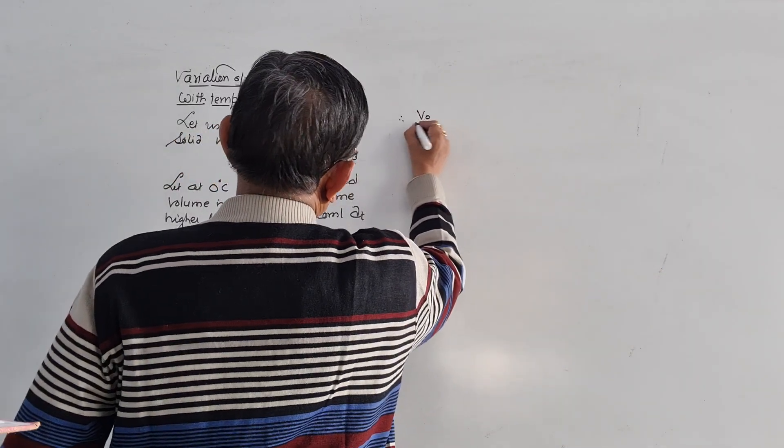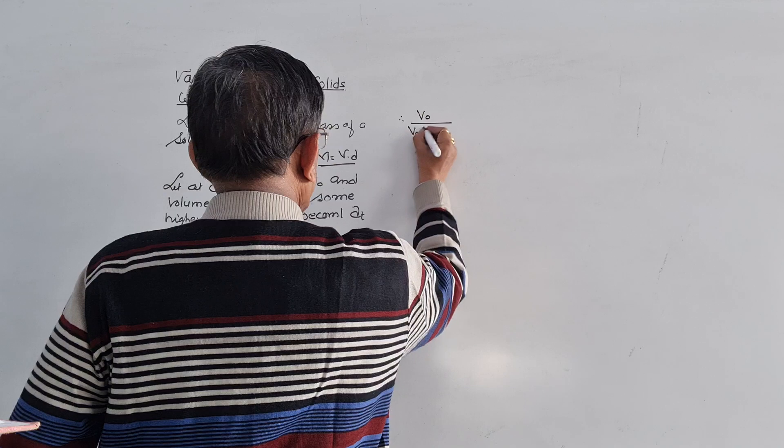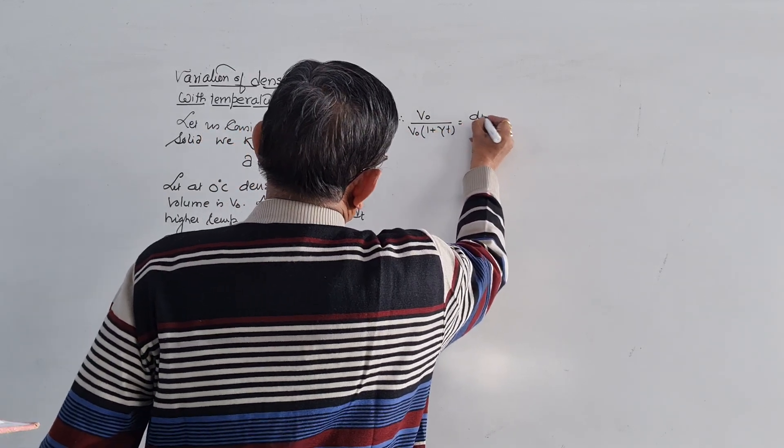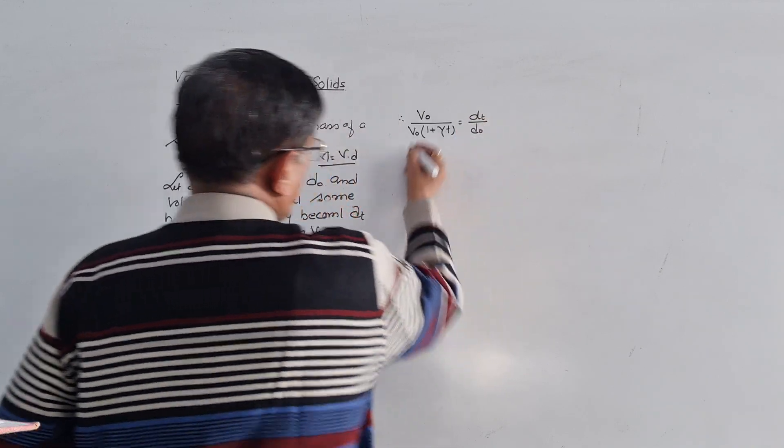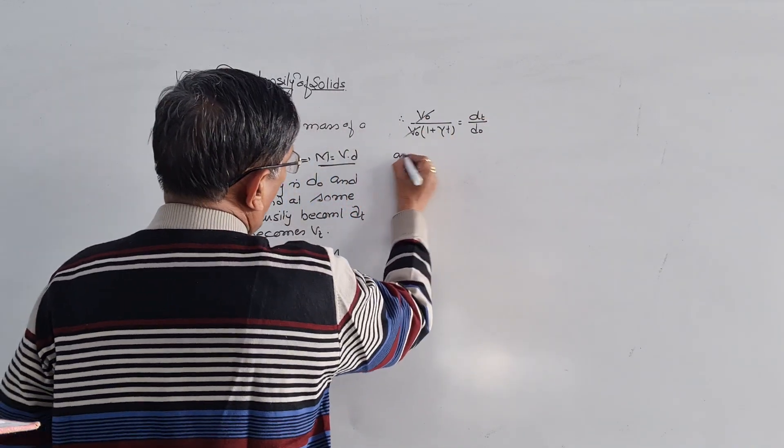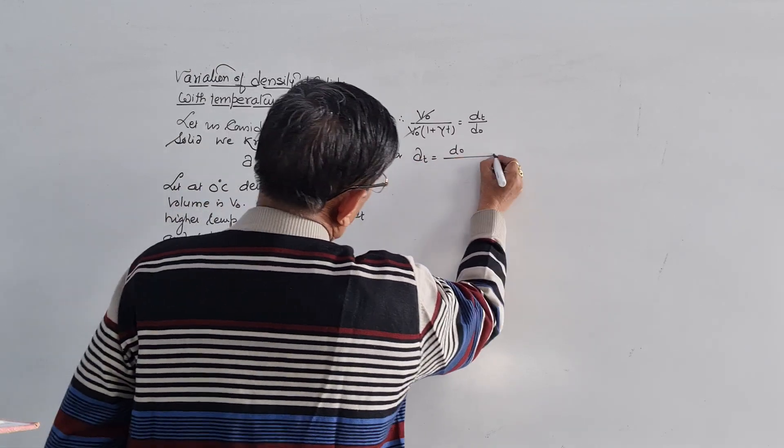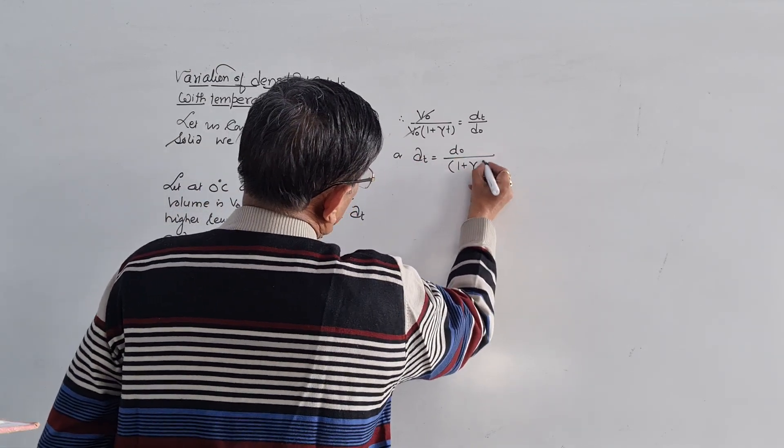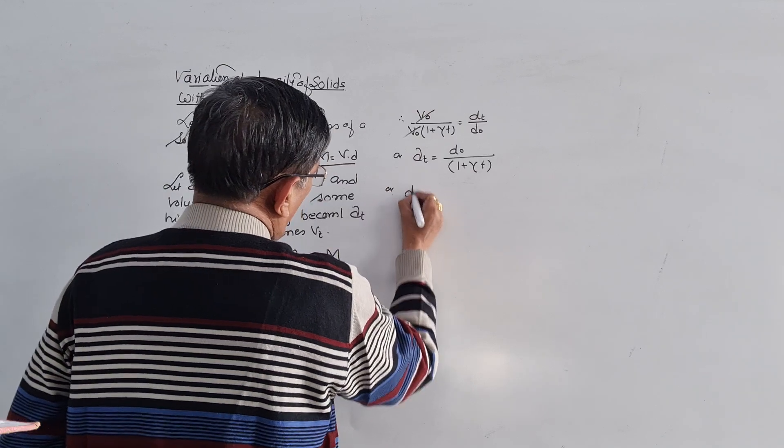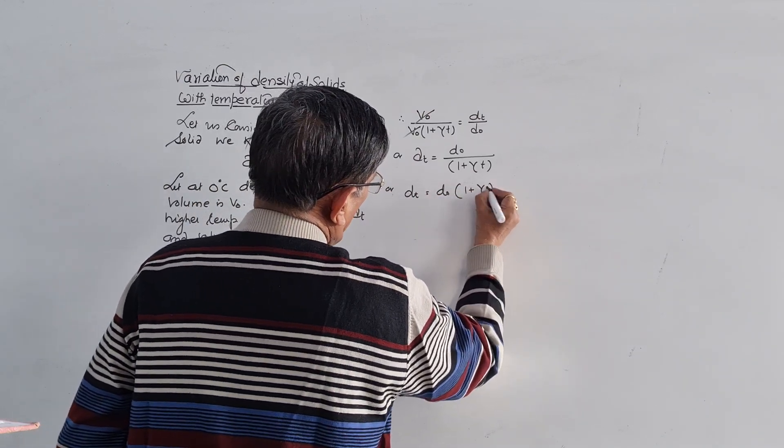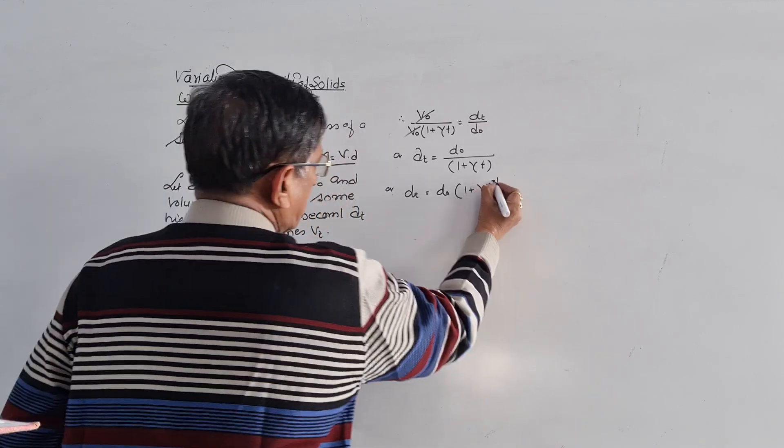V0 upon Vt is equal to V0 upon V0(1 + γt) is equal to Dt upon D0. Or Dt is equal to D0 upon (1 + γt), or Dt is equal to D0(1 + γt) to the power minus 1.